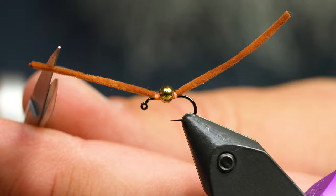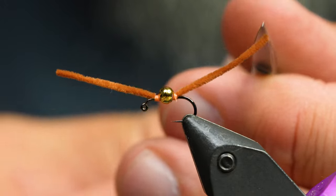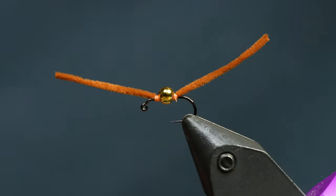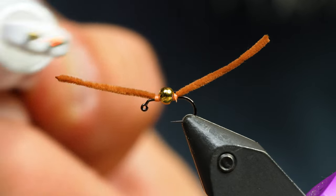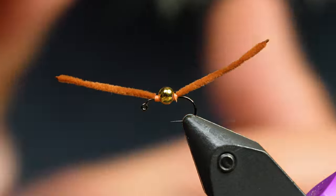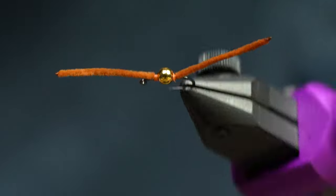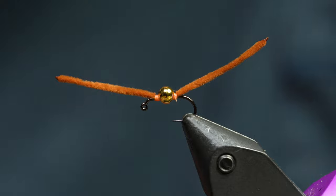I'm actually going to trim it down. So I want it to be about like that. And then I'll just get my cautery tool again and I'm going to singe that end. And there you have a very functional suede worm.